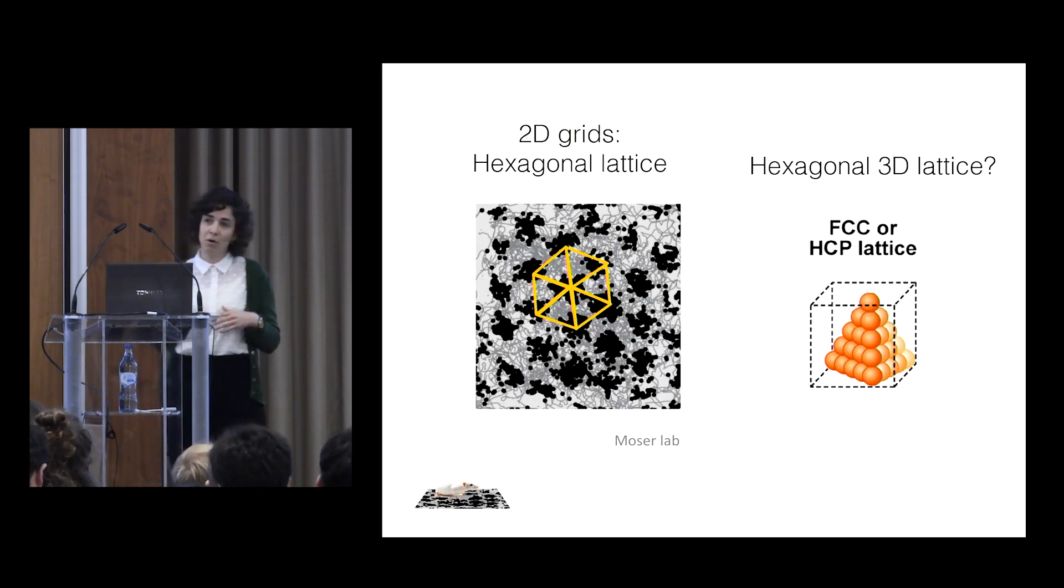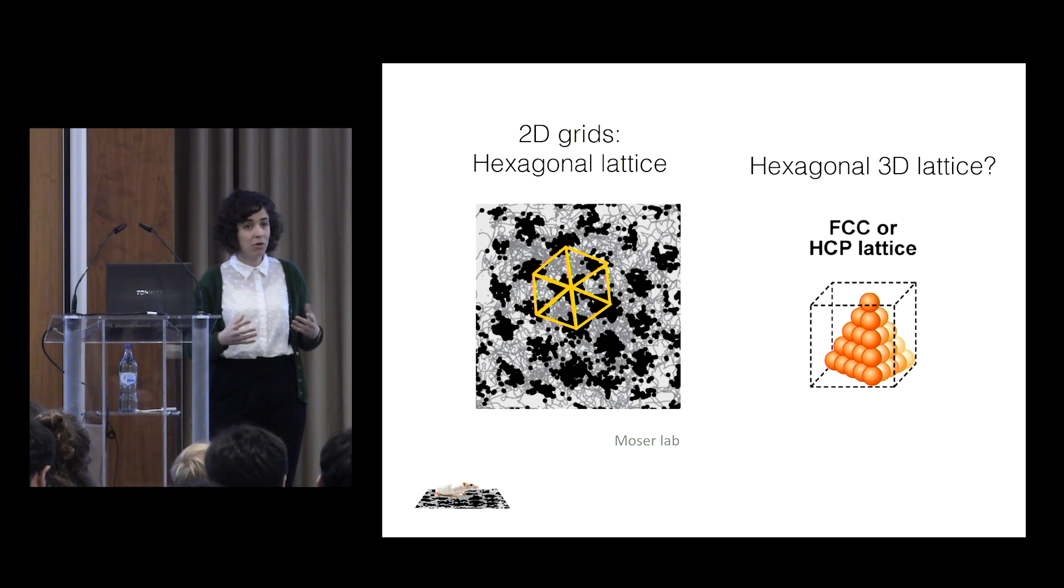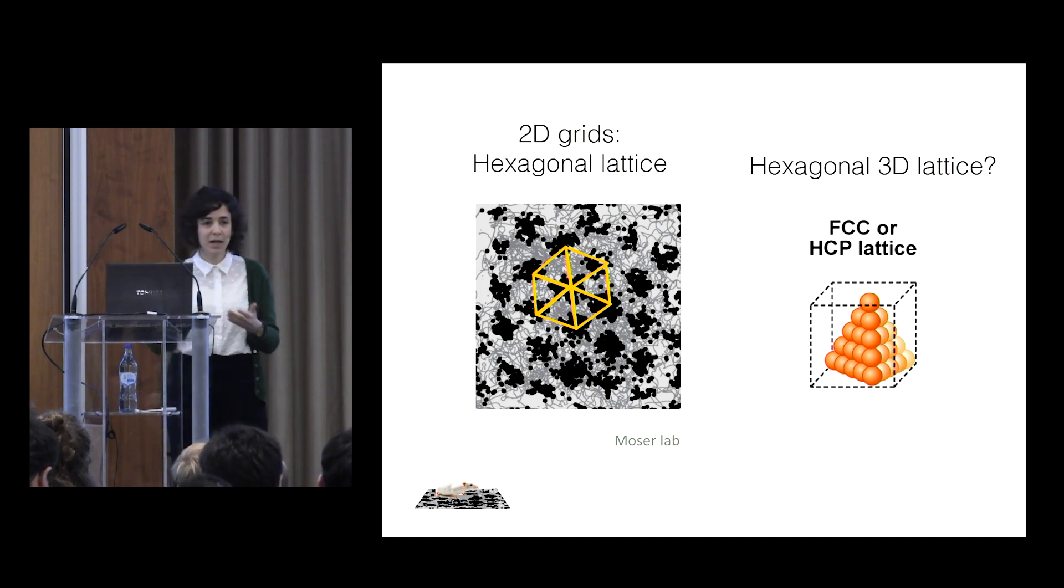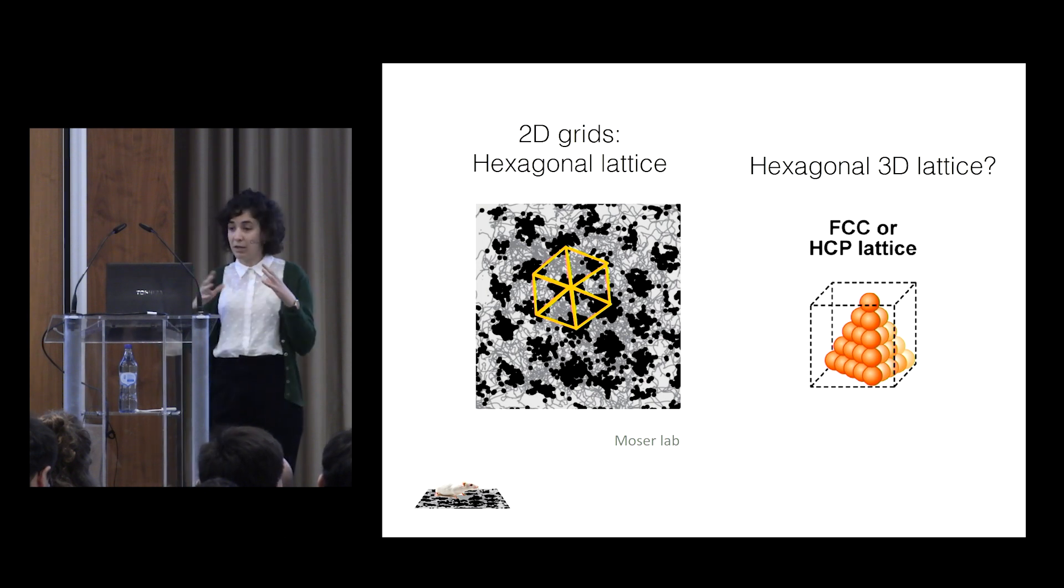Now, you could argue, okay, the fields are locally ordered, but maybe they're also globally ordered. For example, in a hexagonal lattice, that would be your first guess. And several theoretical papers suggested that 3D grid cells would be arranged in a hexagonal 3D lattice.